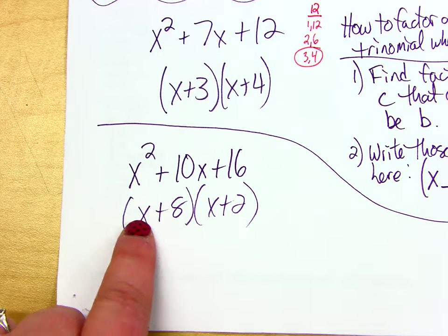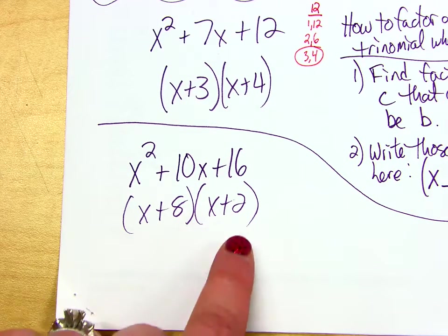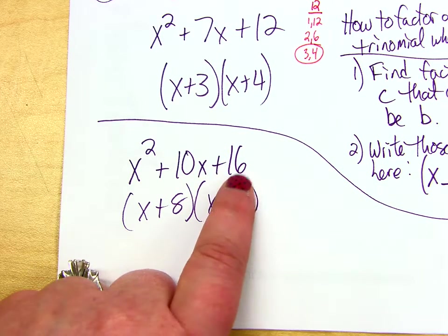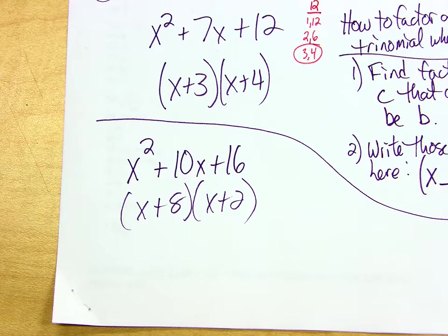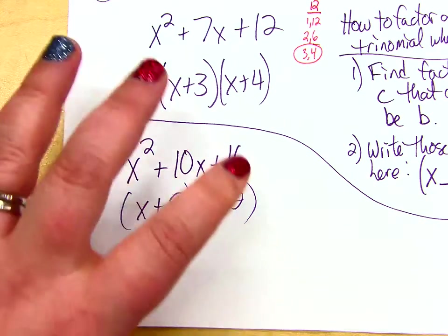What matters is you've got those two binomials. One binomial should be x plus 8. One should be x plus 2. Student asks about outside the thing. You need the two numbers that multiply to be 16 that add to be 10.